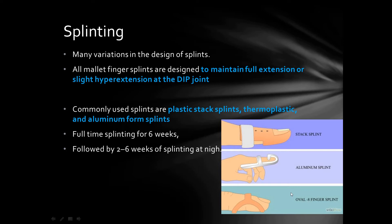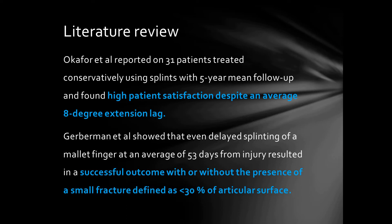Various designs of splints are available, including plastic stack splints, thermoplastic and aluminium splints, and oval-8 finger splints. The basic principle of all these splints is to maintain full extension or slight hyperextension at the distal interphalangeal joint. Hyperextension is avoided and progressive flexion exercises begin at six weeks. Studies support the use of splinting in mallet finger.